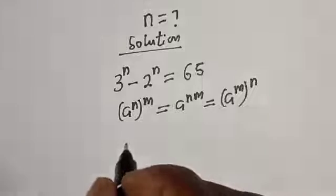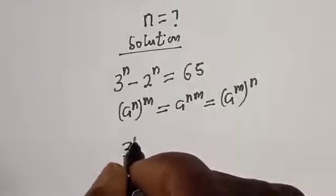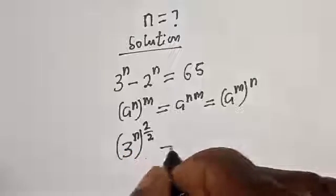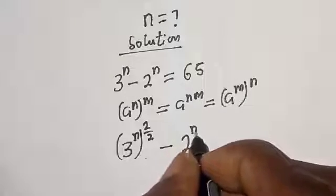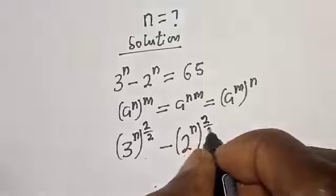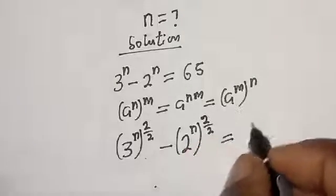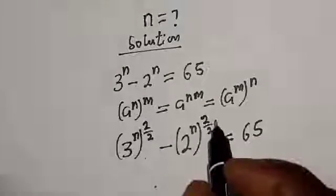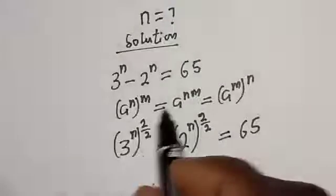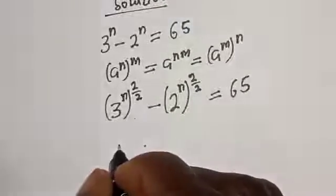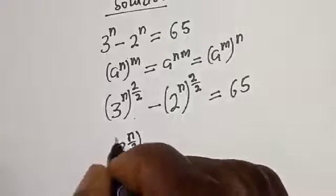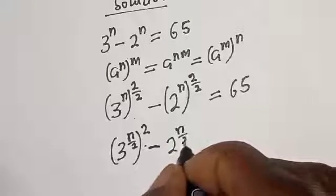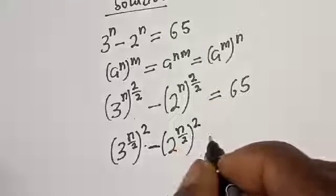Now for this equation, let's add a trick. We rewrite: 3 raised to power n over 2, all to the power of 2 over 2, minus 2 raised to power n, all to the power of 2 over 2, equals 65. This does not change the exponent because 2 divided by 2 gives 1. From the rule, this becomes 3 raised to power n over 2, squared, minus 2 raised to power n over 2, squared, equals 65.